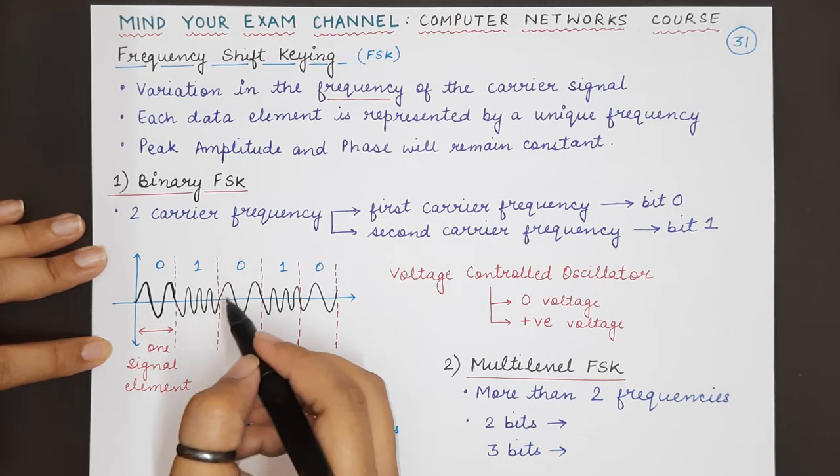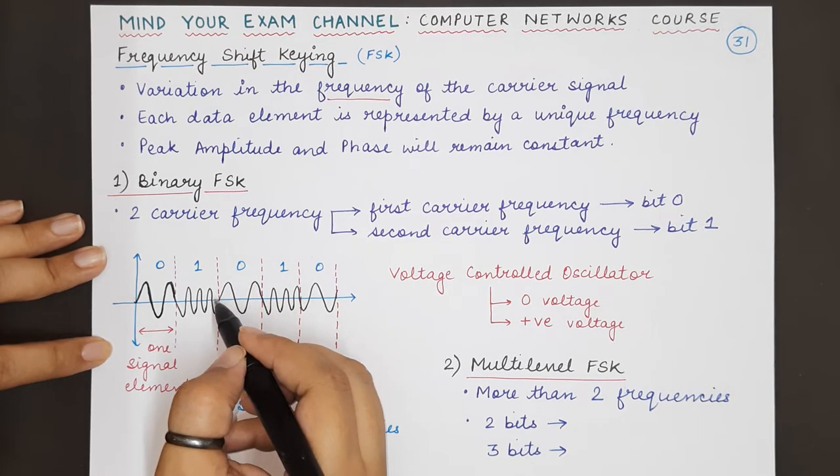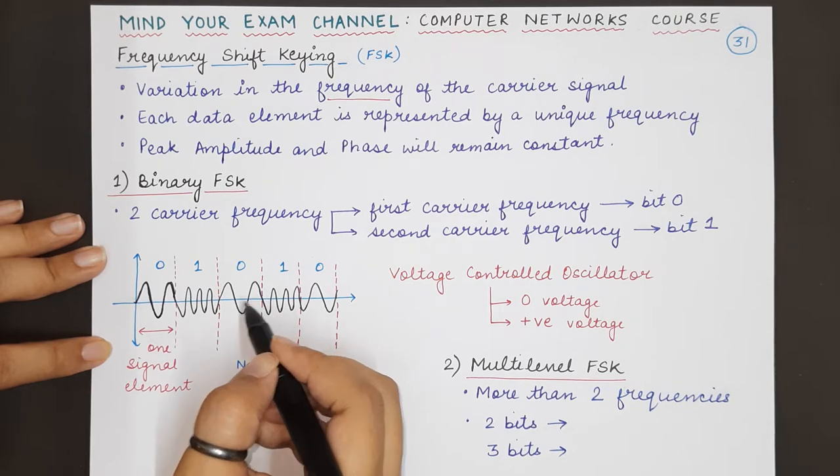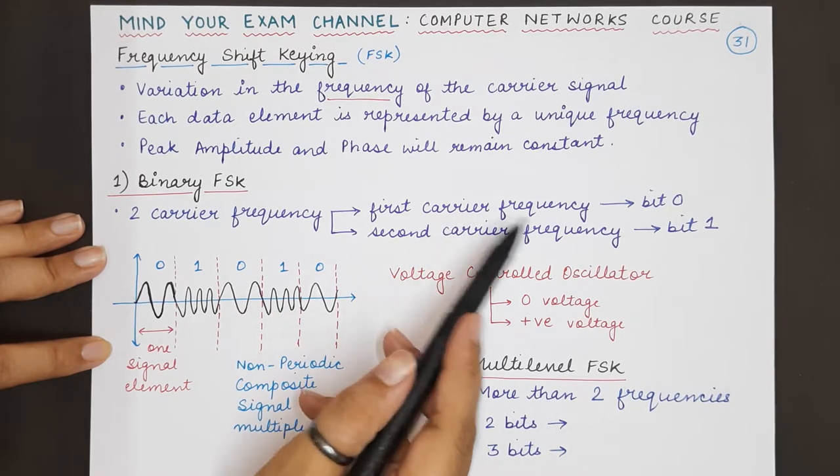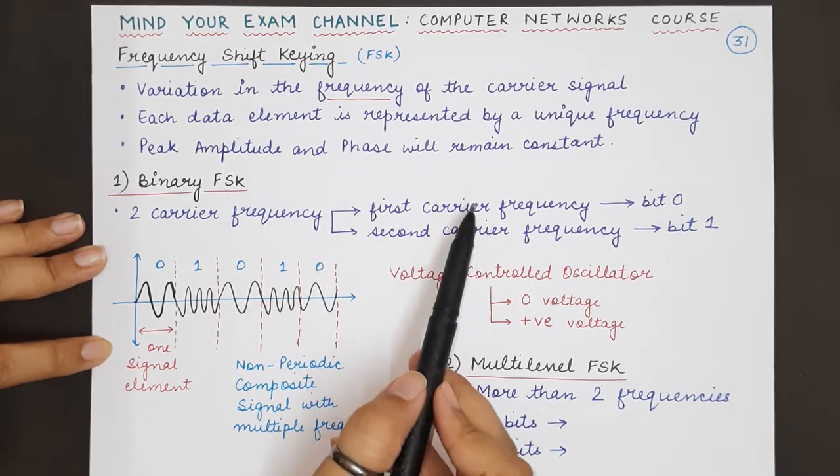When we want to represent 0 as the third bit, we will reduce the carrier frequency and bring it to the same level as the first carrier frequency.